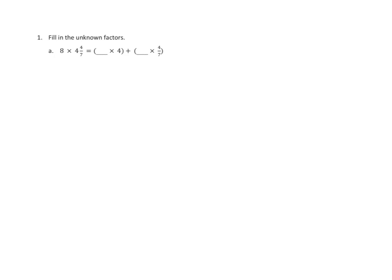Problem number one, let us fill in the unknown factors. So let's look at what we have here. We've got eight times, and then here's a mixed number, four and four sevenths. So we need to make sure that we use the distributive property to multiply the eight times both of these parts of the mixed numbers. We are going to multiply the eight times the four wholes, but we are also going to multiply the eight times the four sevenths. All we're asked to do in this problem is to remember to distribute that multiplication, to multiply the eight times both parts of our mixed number.